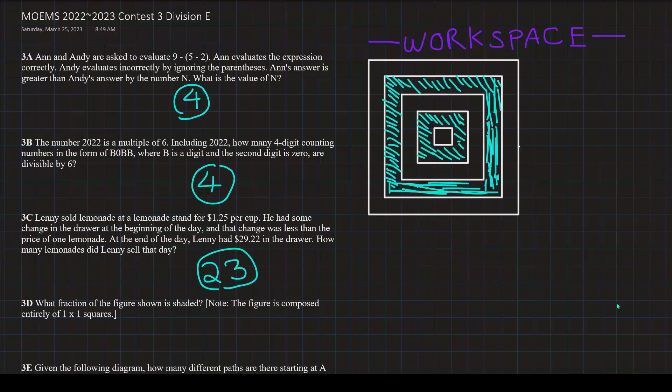Now, let's do problem D. What fraction of the figure shown is shaded? Note, the figure is composed entirely of one by one squares. So, here is the figure from the contest. I did my best to try to reconstruct it. And, here are the individual one by one squares.